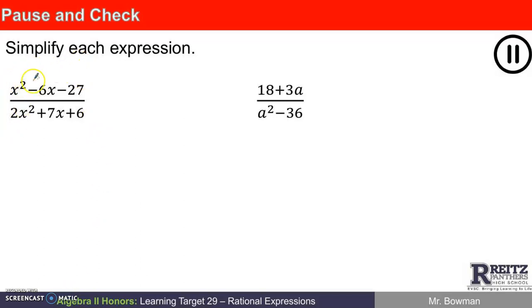I want to simplify x squared minus 6x minus 27 over 2x squared plus 7x plus 6. And to do it, I'd like to factor both the numerator and the denominator. The numerator is a trinomial to factor x squared minus 6x minus 27. So x and x will form x squared. I think I need two numbers that add up to negative 6 and multiply to negative 27. And I think that's negative 9 and positive 3.